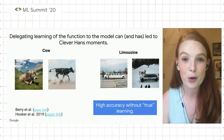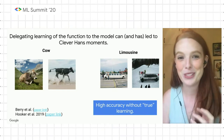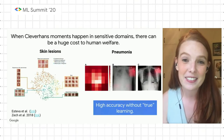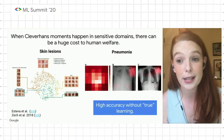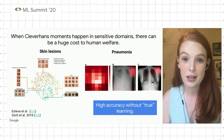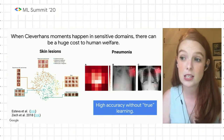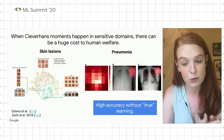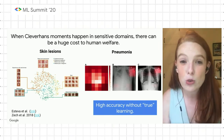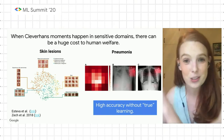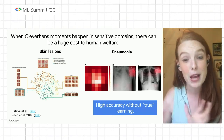This is interesting because this is a type of learning that we as humans are more robust to — even if I put a cow on a beach, you would likely be able to say yes, that's a cow. But when Clever Hans moments happen in more sensitive domains, there can be a huge cost to human welfare. Two studies — one of skin lesions and one of pneumonia — have shown that the model learned to pick up on things that weren't actually critical to the task. For skin lesions, a lot of training data for malignant tumors was photographed along rulers, so the model learned that an image with a ruler was associated with a certain subclass. For pneumonia, it learned to associate a metal tag placed by a certain hospital with certain types of images.